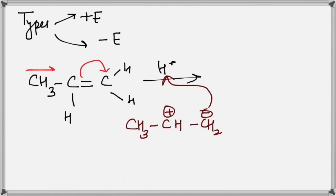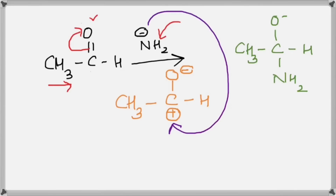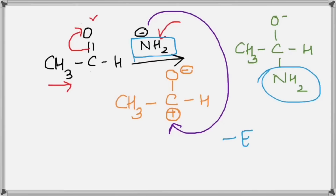These things happen in one step — we are doing this just for explanation. So we end up with CH₃-CH⁺ and CH₃. The H⁺ gets attached to the carbon where the negative charge shifted. When such a process happens, we call it a +E effect. In the previous aldehyde example, NH₂⁻ went to the carbon from where the negative charge shifted — when that happens, we call it a −E effect. In the next video, we will look at one of the most important effects in organic chemistry: resonance.